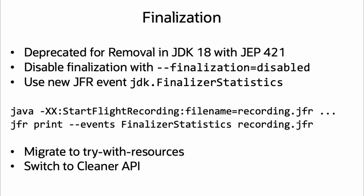To prepare for the removal of finalization, the first step might be to disable finalization with the VM argument finalization=disabled. This entirely turns off finalization even when it originates within the JDK itself. If your application experiences no issues, then your work might be done. If you do have issues, consider using the new JFR event JDK.FinalizerStatistics to track usage of finalization.